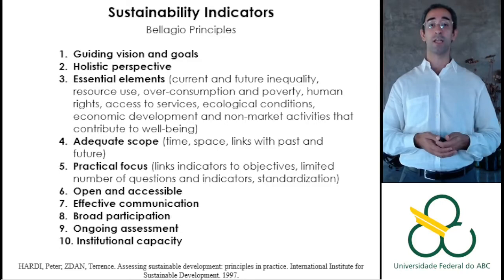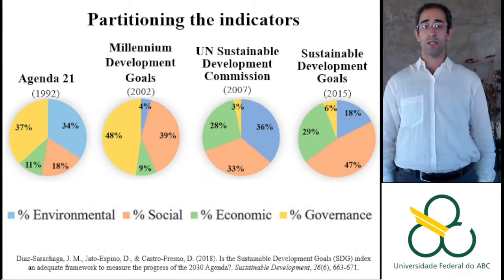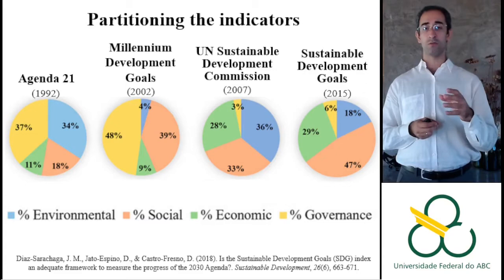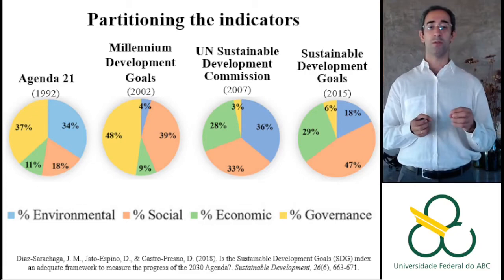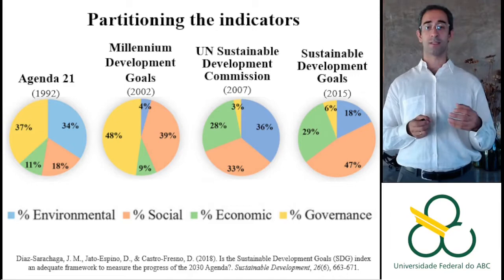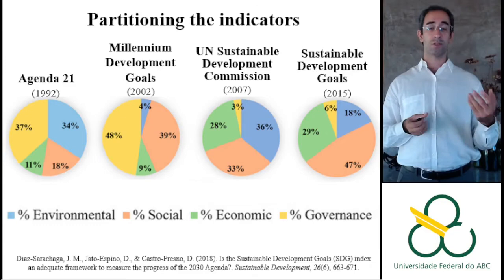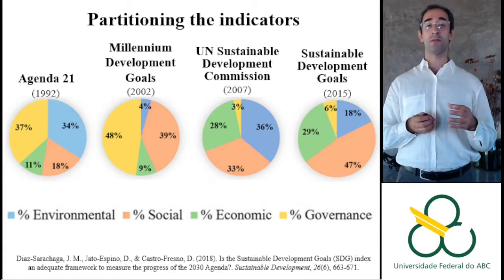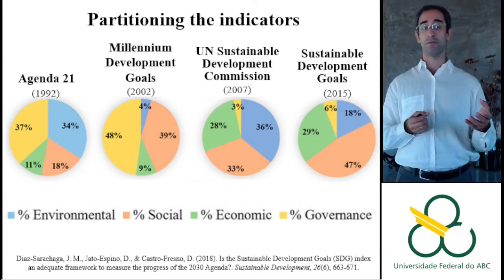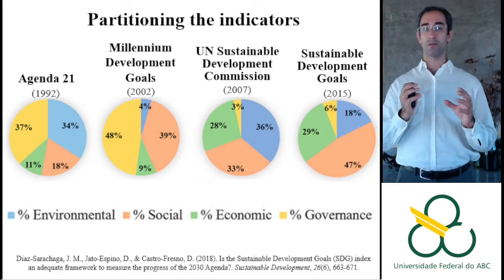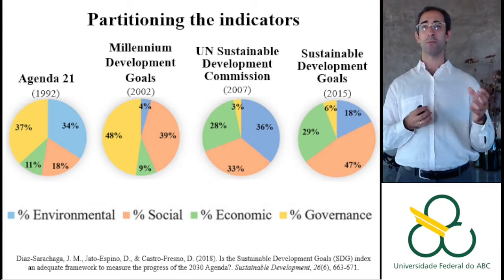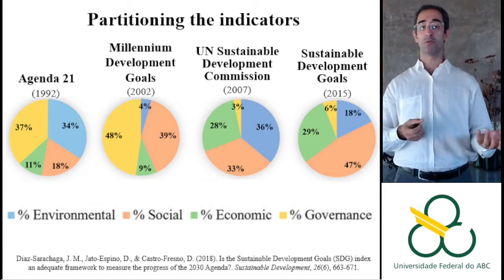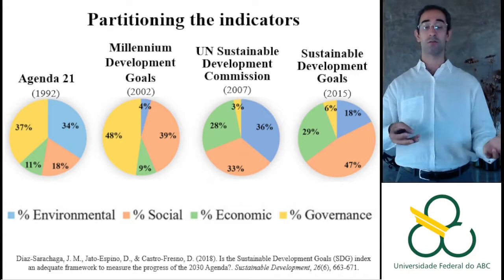Moving to the historical perspective: one study divided indicators into environmental, social, economic, and governance categories. We already discussed the triplet of sustainable development — environmental, social, and economic. Looking at a graph of how indicators were distributed over time, we can ask: are the sustainable development goals and indicators selected so far balanced, giving equal focus to all aspects? Governance refers to how we structure institutional capacity and cooperation among entities to achieve goals.